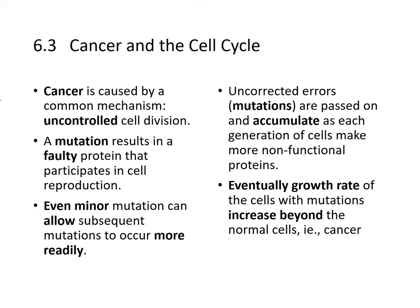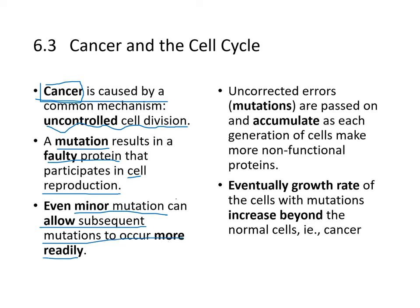Other failures in regulation can cause diseases. The most common cause of cancer is uncontrolled cell division. Mutations cause faulty proteins that participate in cell cycle regulation, and even minor mutations can allow subsequent mutations to occur more readily. Uncorrected errors accumulate in each generation of cells, producing more non-functional proteins until the growth rate of mutated cells exceeds that of normal cells — and you have cancer.